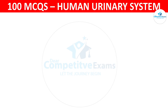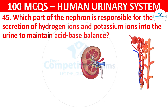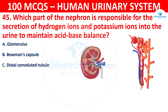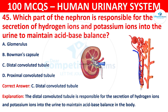Question 45: Which part of the nephron is responsible for the secretion of hydrogen ions and potassium ions into the urine to maintain acid-base balance? The options are: glomerulus, Bowman's capsule, distal convoluted tubule, or proximal convoluted tubule. The correct answer is C, that is the distal convoluted tubule. The distal convoluted tubule is responsible for the secretion of hydrogen ions and potassium ions into the urine to maintain acid-base balance in the body.